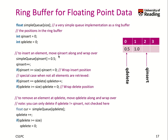When we insert an element, we move the insert pointer along. If we insert the first element, which in this case is 0.5, we increment the insert pointer by one. If the insert pointer would be bigger than the number of elements in our ring buffer, we would wrap around and move the insert pointer back to position zero. If the insert pointer equals the delete pointer, we can increment the delete pointer. And if the delete pointer is bigger than size, we have to wrap it around again.